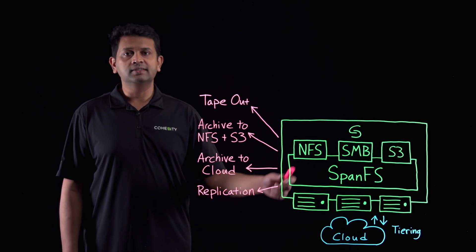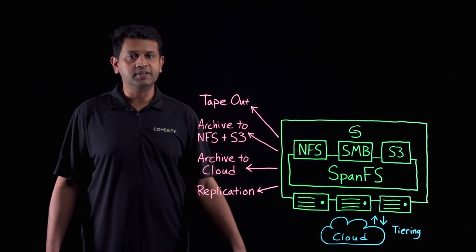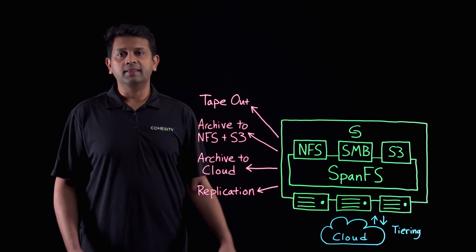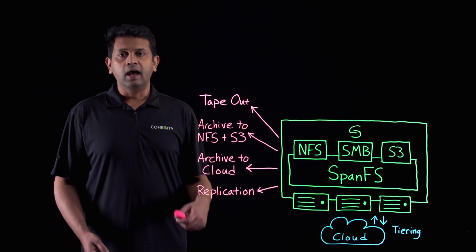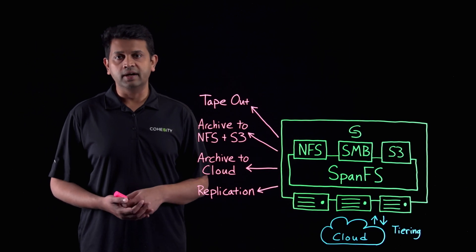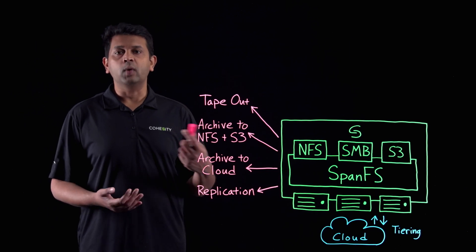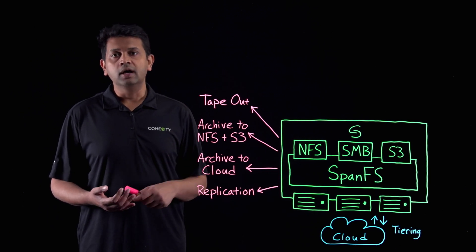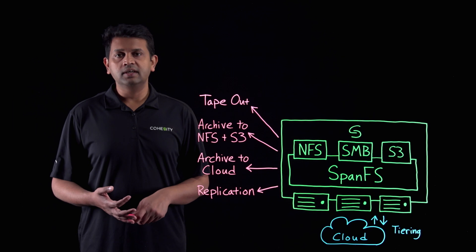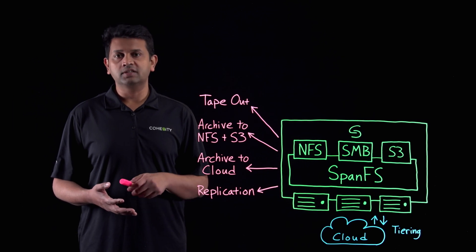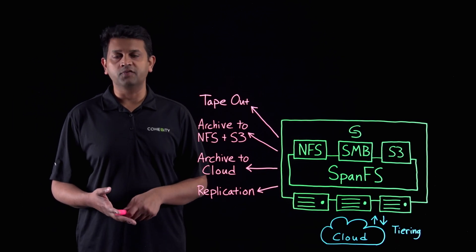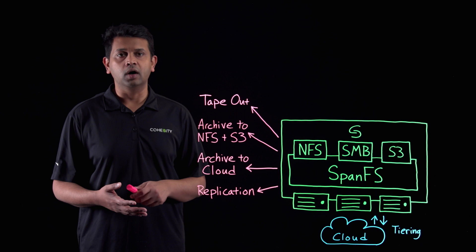Coeicity is a scale-out cluster that is web-scale. What we mean by that is every single node has all the services running in it. So when you add a node, you add more SSD, more compute, more space for metadata, more space for data, and so on.